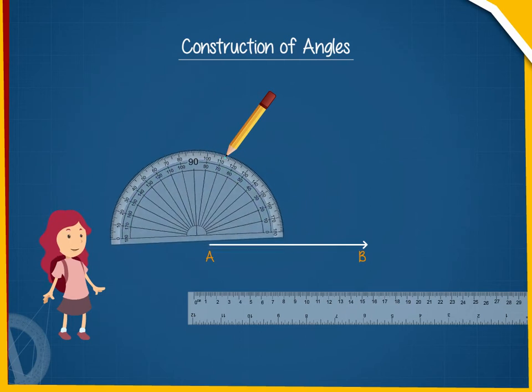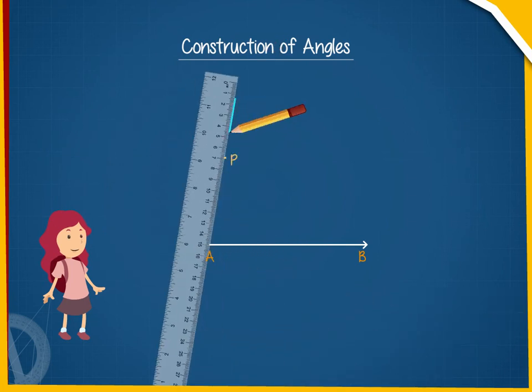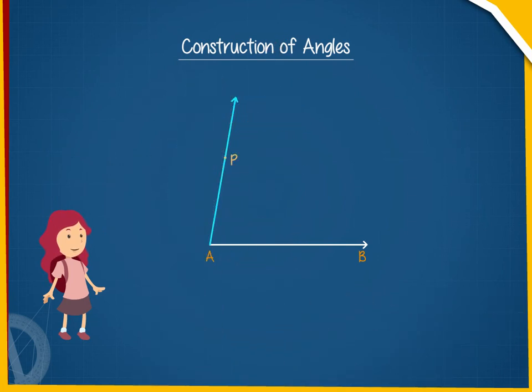After this, she removes the protractor and draws the ray AP. The angle PAB so formed is the required angle whose measure is 80 degrees.